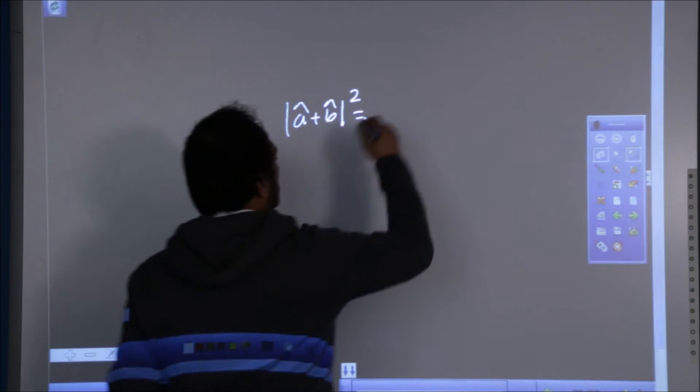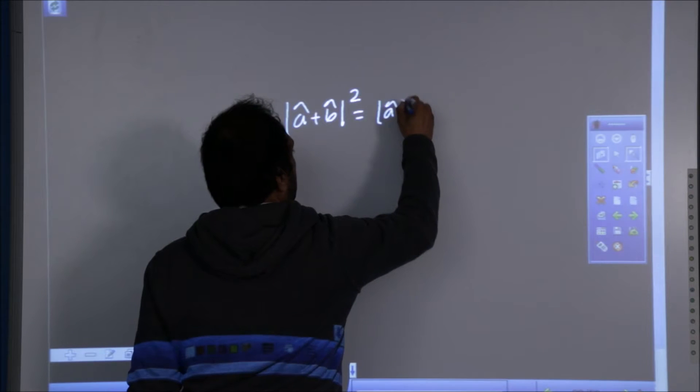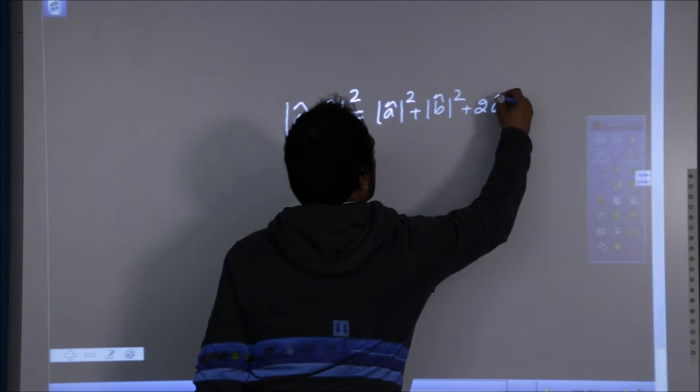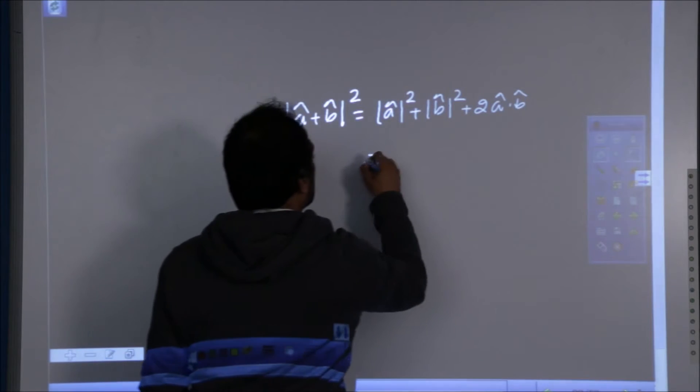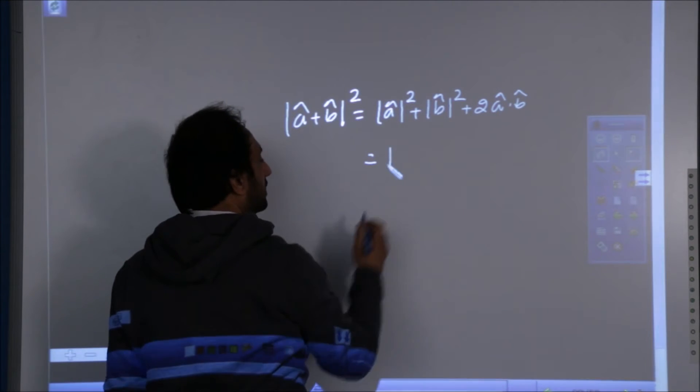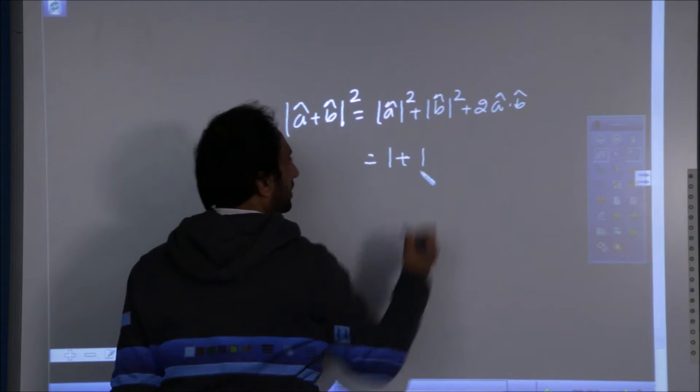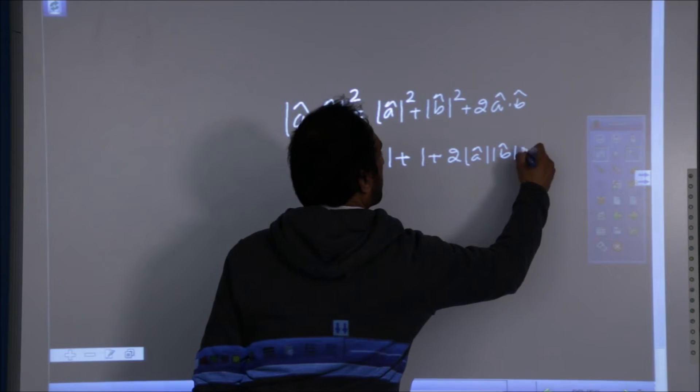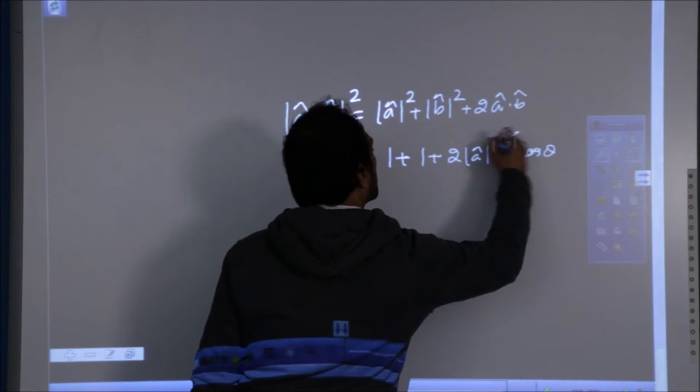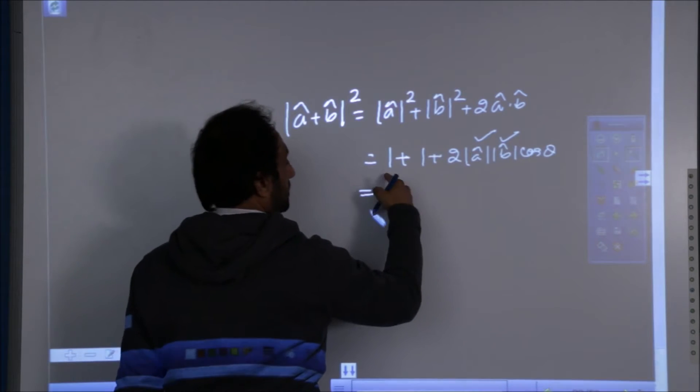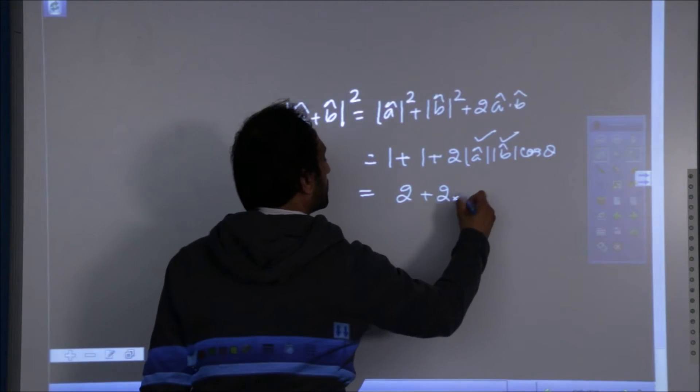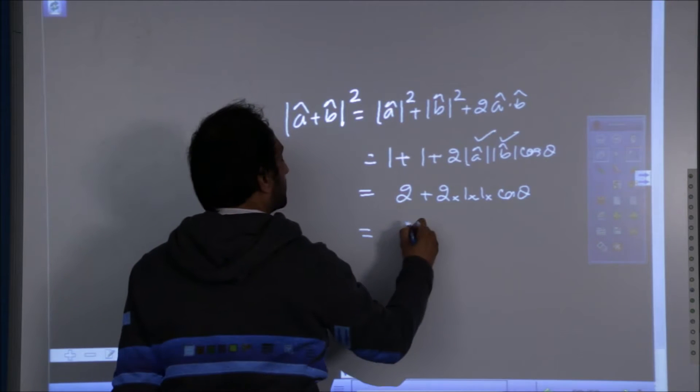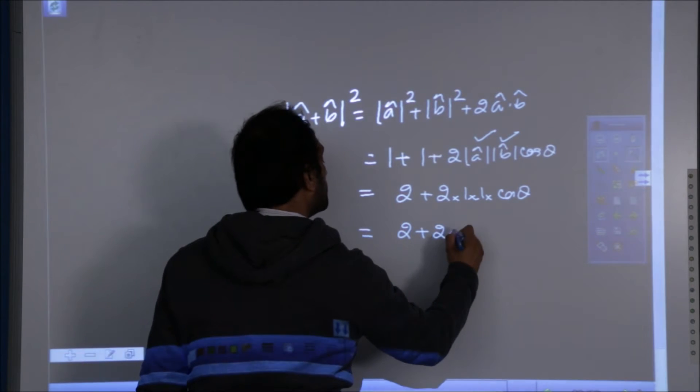This is equal to, I am writing it again. Now, what is this? This is 1 plus 1 plus, again opening the definition, these two are also 1. So, 1 plus 1 is 2 plus this time 2 into 1 into cos theta. So, the next step is 2 plus 2 cos theta.